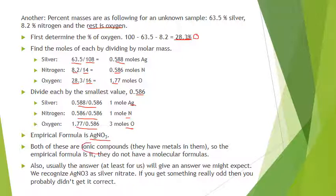Notice that the last two examples both have a metal and are ionic compounds. These are both the empirical formulas and the molecular formulas — ionic compounds don't really have molecular formulas, just empirical formulas. The answer should make sense: AgNO3 is silver nitrate, something you recognize. For us, we're not discovering new substances, so if the answer looks familiar, it's probably right.